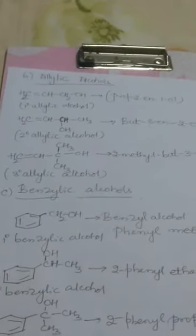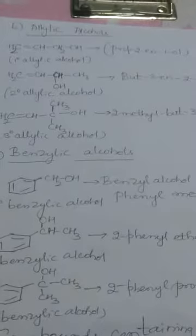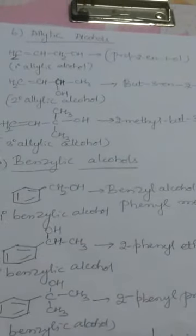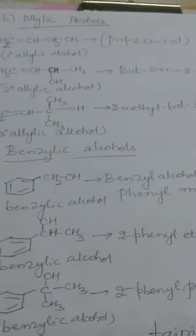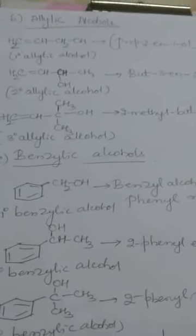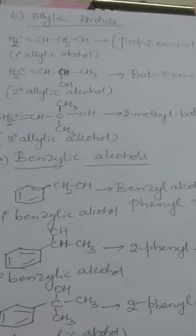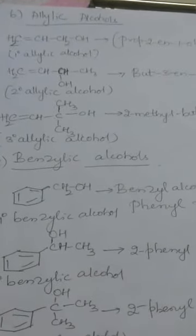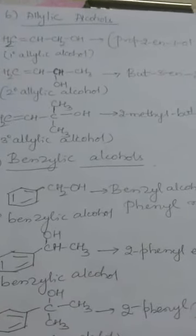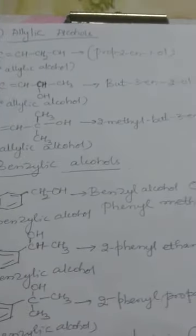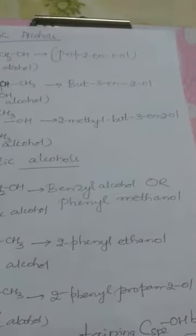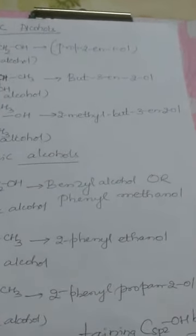For tertiary allylic alcohol, the hydroxy group is bonded to the tertiary carbon of the allylic group: CH₂=CH–C(CH₃)₂OH. Its IUPAC name is 2-methylbut-3-en-2-ol.